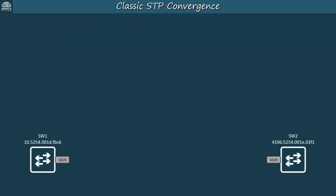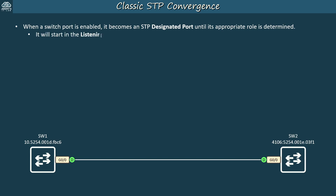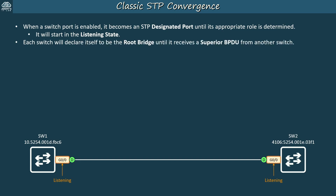Let's start with a quick review of classic STP convergence. When a switch port is enabled, it becomes an STP designated port until its appropriate role is determined. So when we connect SW1 and SW2, bringing up their G0/0 ports, they will both be designated ports. Each port will start in the listening state, unable to forward data frames, but sending BPDUs every two seconds. Each switch will declare itself to be the root bridge until it receives a superior BPDU from another switch. Superior means having the lowest bridge ID.